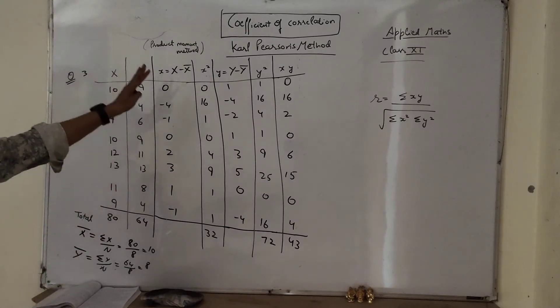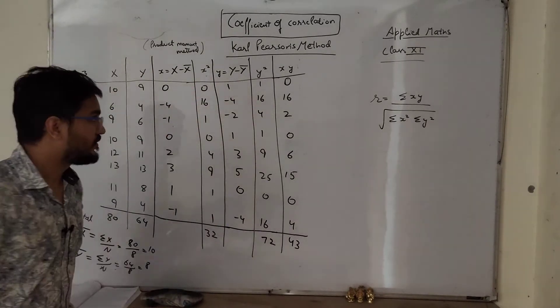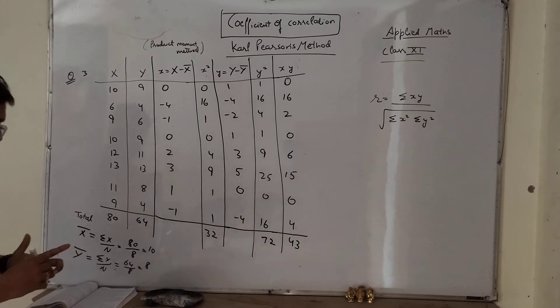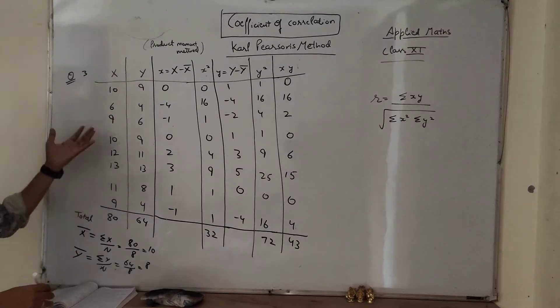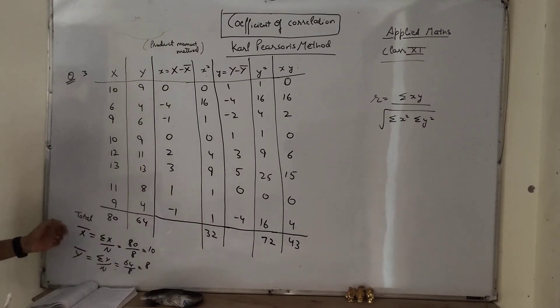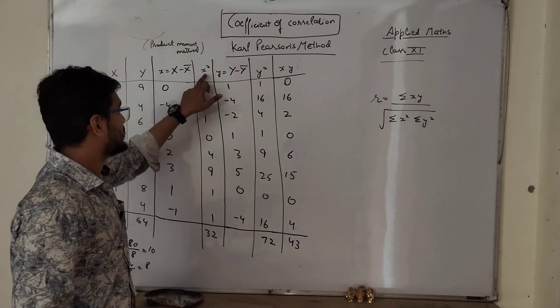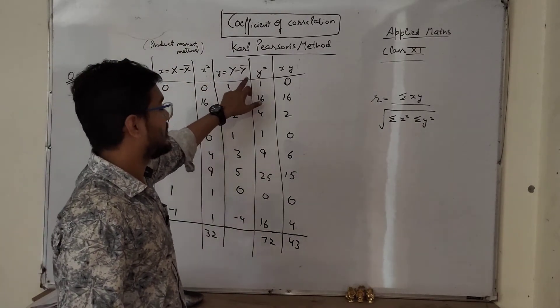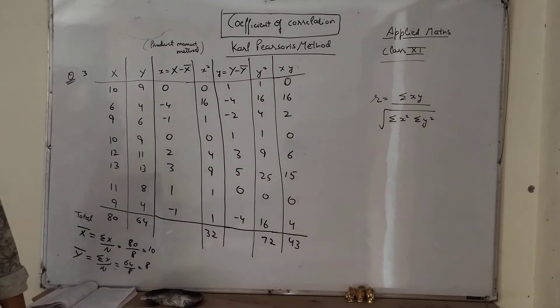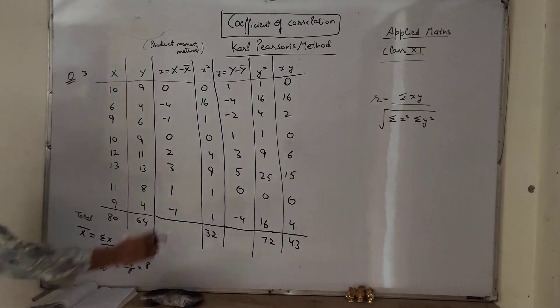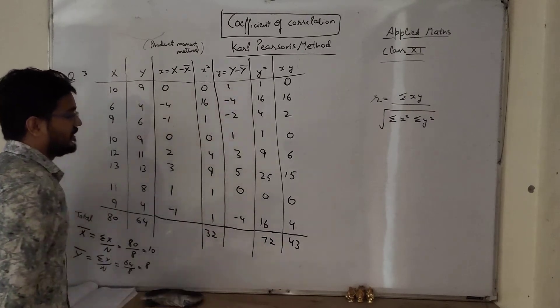So now all the columns we have determined so far, very easy. Just simply we have followed the procedure: x bar we have determined, y bar we have determined, then small x, x minus x bar, x square, small y, y minus y bar, y square, and then product of both the columns.